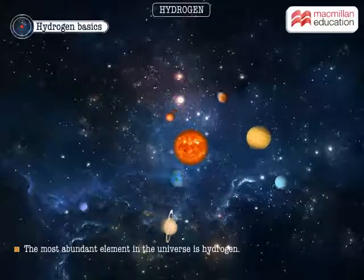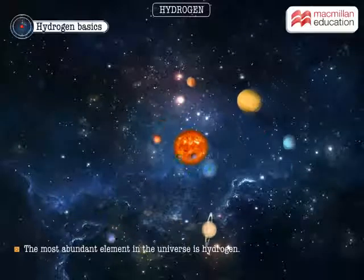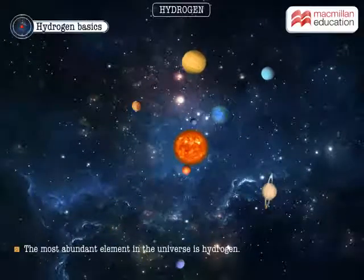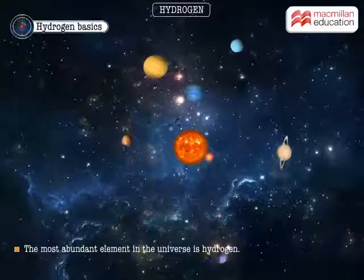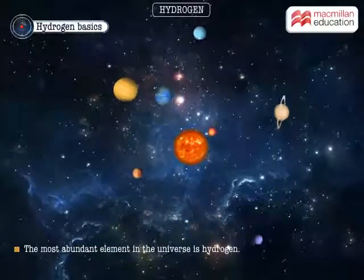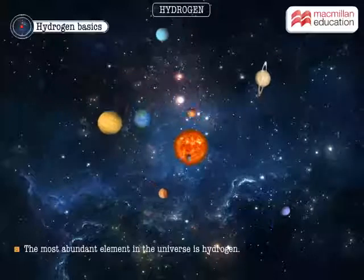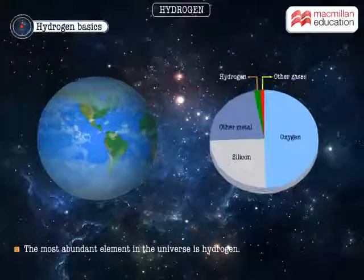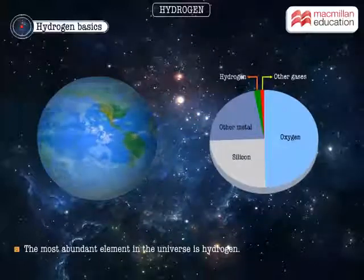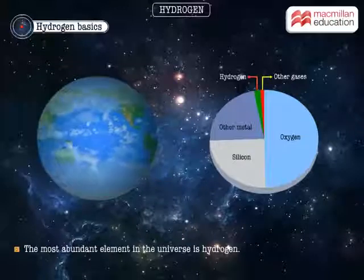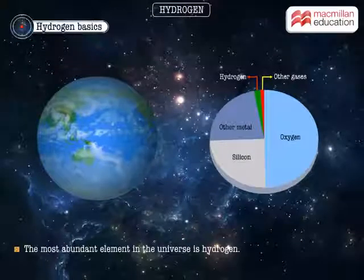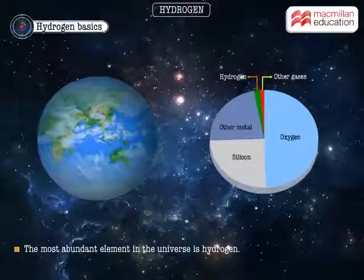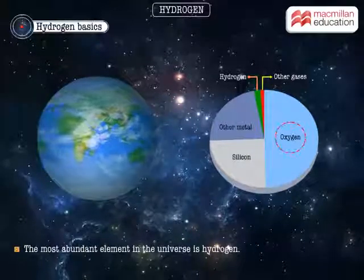The most abundant element in the universe is hydrogen. It makes up about three-fourths of all matter. Hydrogen is the third most abundant non-metal of the Earth's crust after oxygen and silicon.